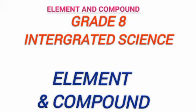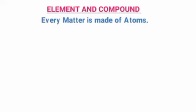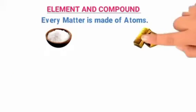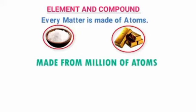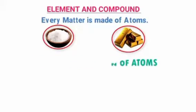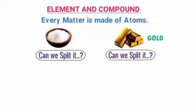Elements and compounds, grade 8. What is an element? What is a compound? Every matter is made of atoms. Let me give you two examples: look at table salt and gold — both are made from millions of atoms. Can we split table salt into two or more simpler items? Can we split gold into two or more simpler items?